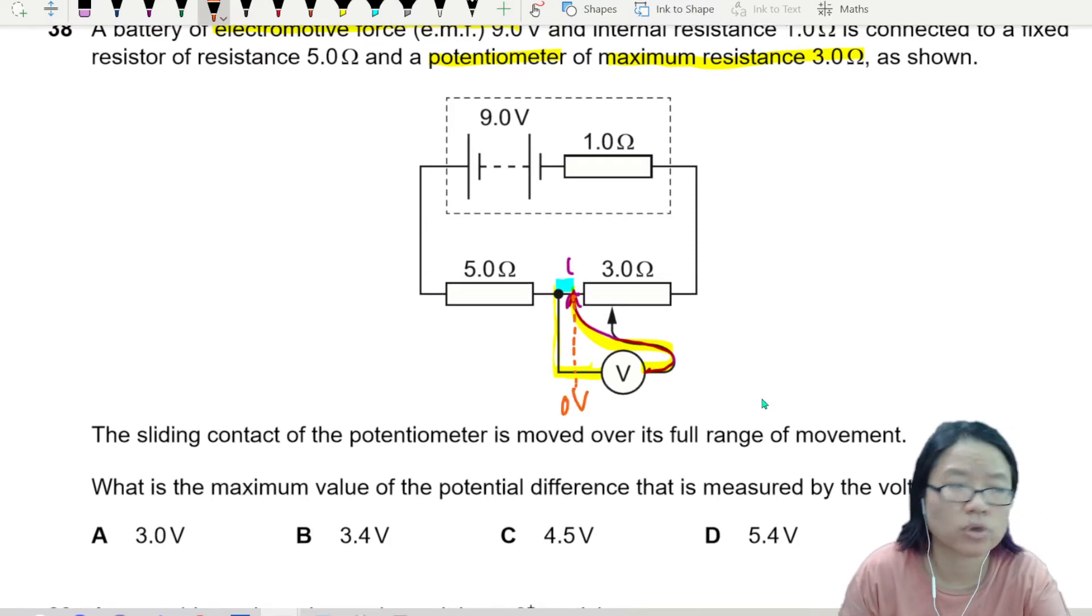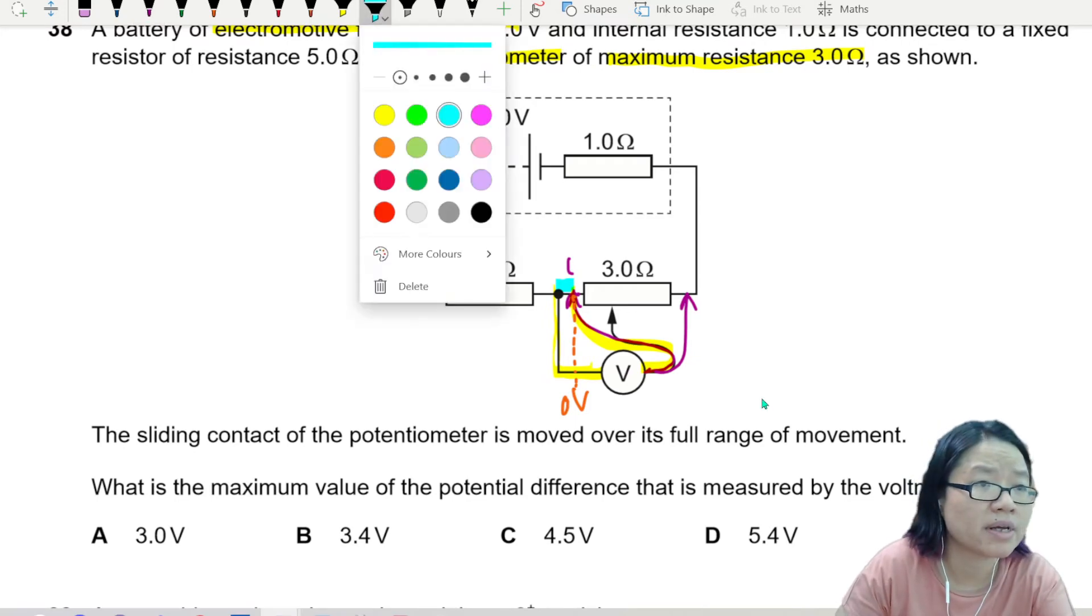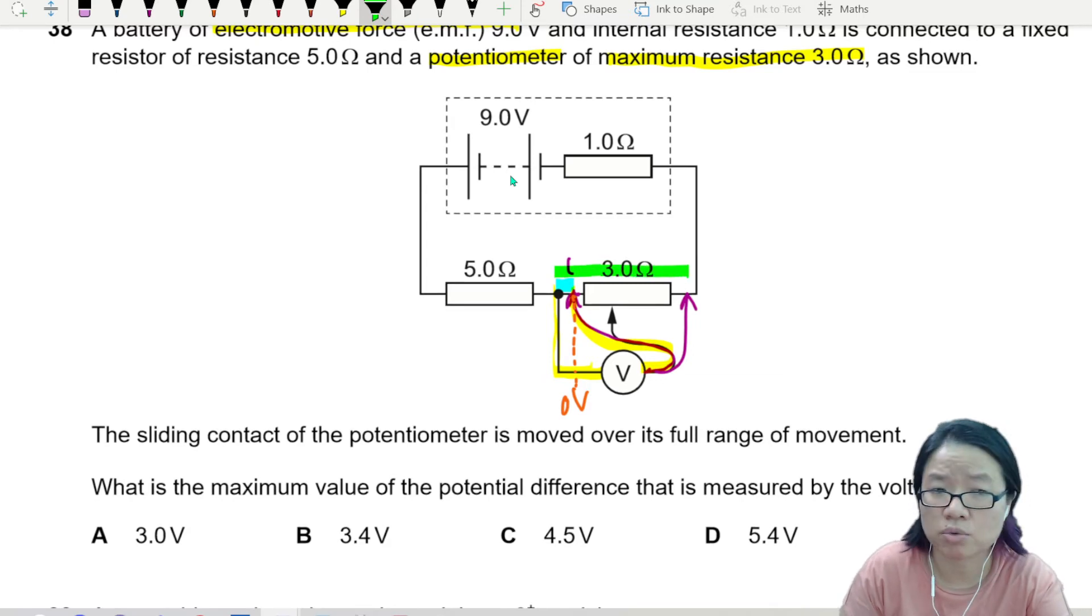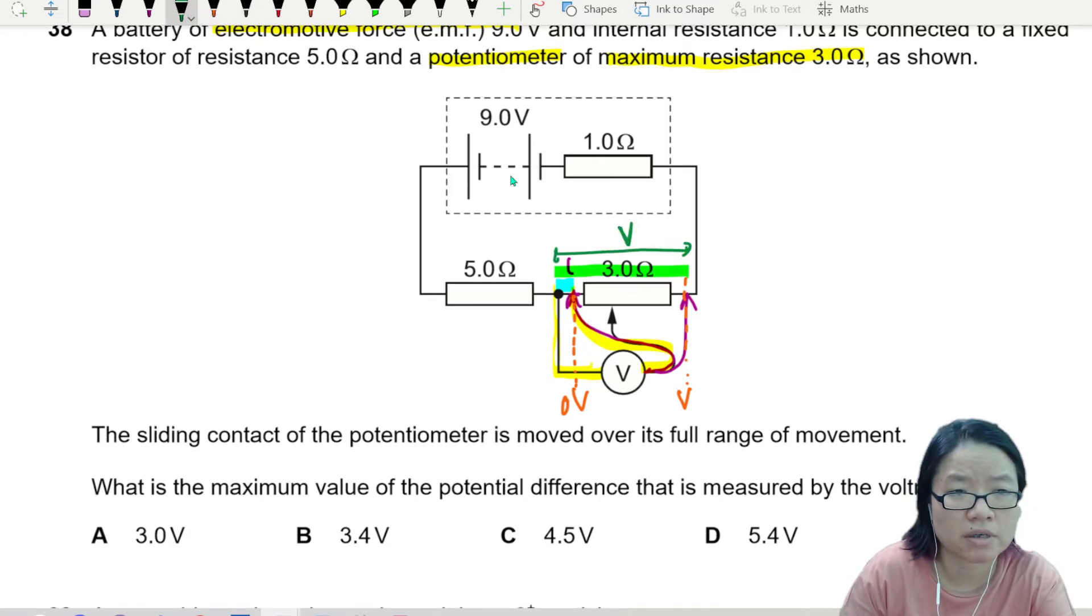Now let's move our slider to this point. If the slider can move to this point, then the energy conversion is here to here, across 3 ohms. So it's definitely not zero volts. Let's say this is V and I want to find the potential difference across here. This is the V that I'm looking for. The voltage divider ratio is your best friend.